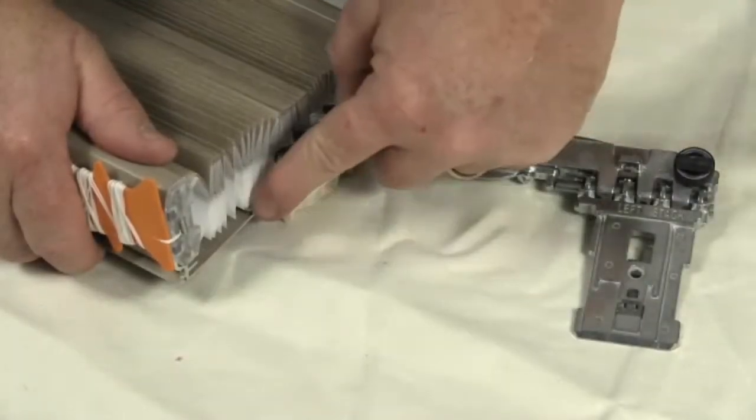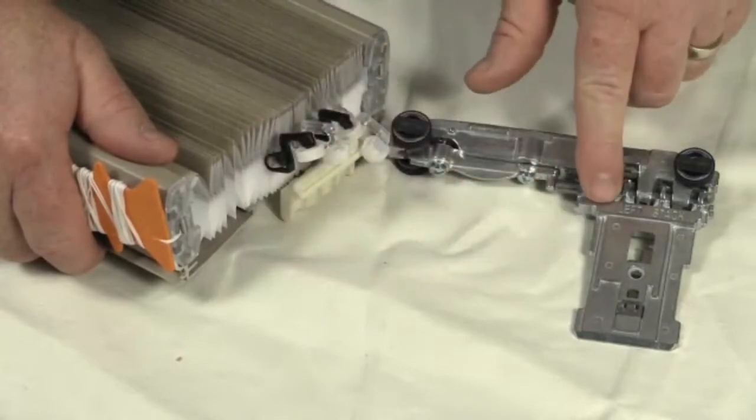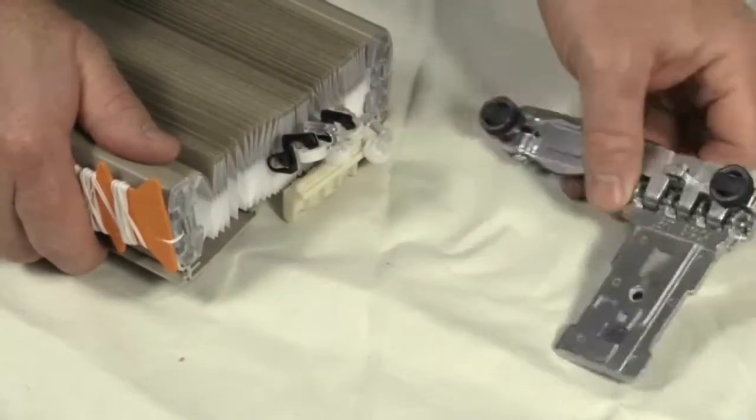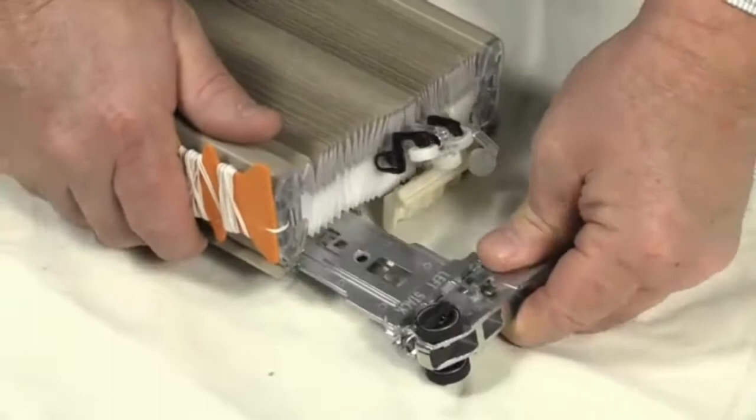Insert the moving rail bracket into the moving rail. Check that the bracket catches are fully engaged.